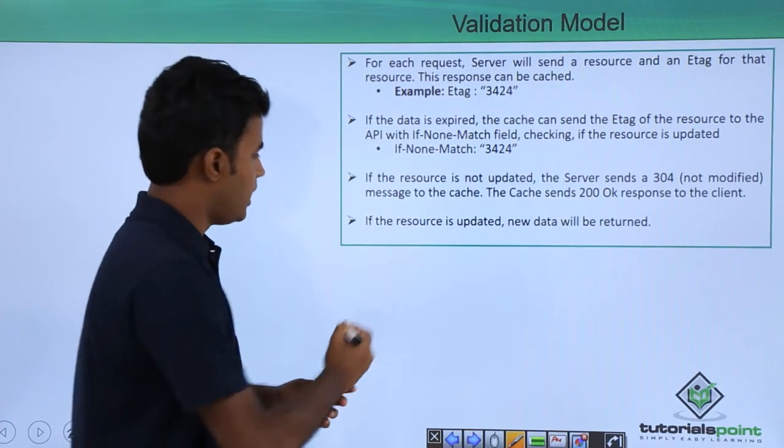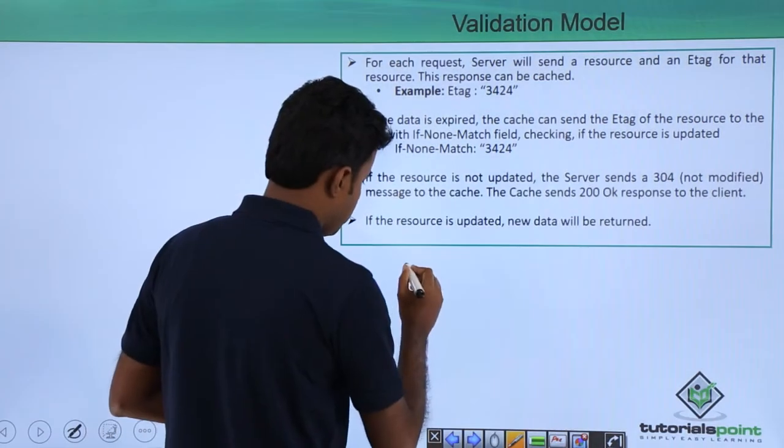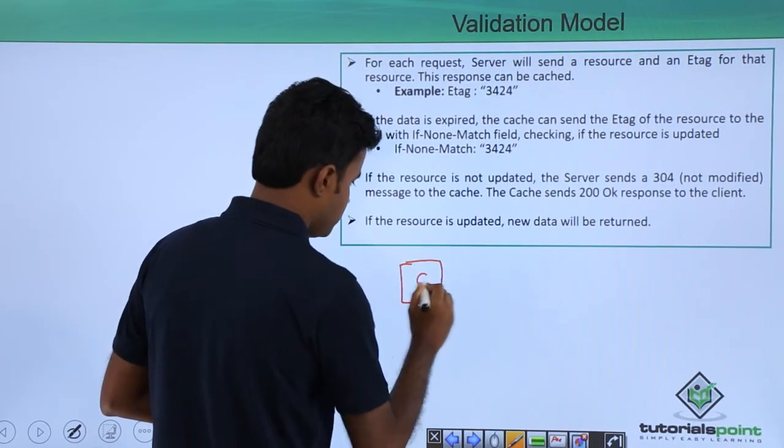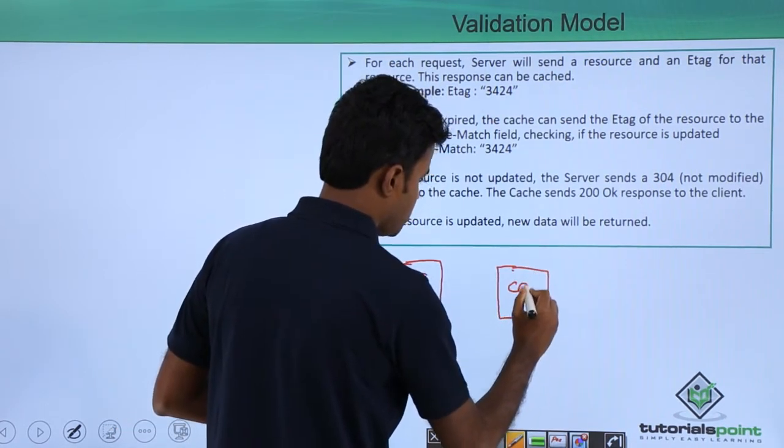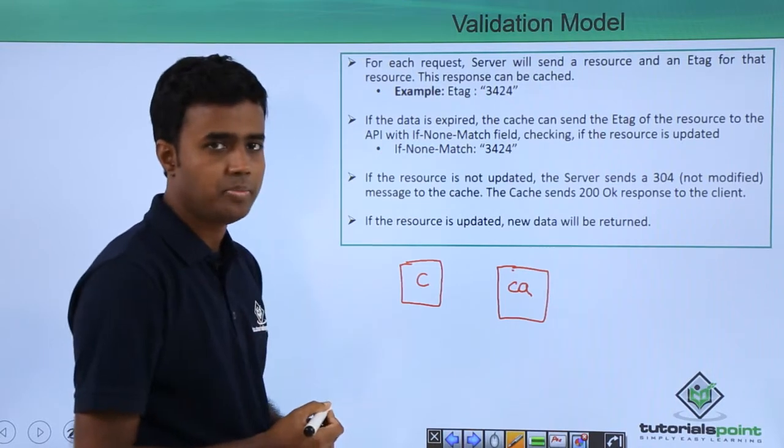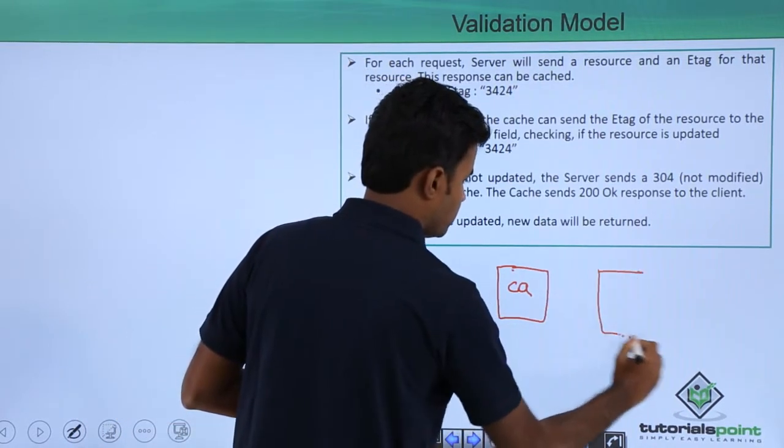So let us see the example here. Suppose I have the client and I have the cache which could be on the browser or it could be on the network, and I have the API over here.